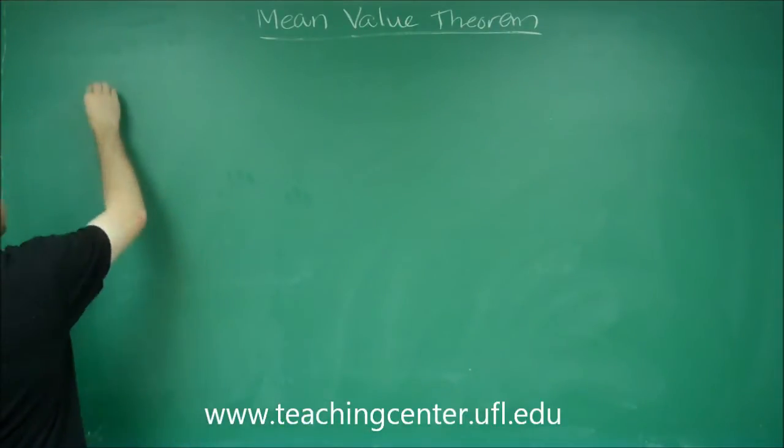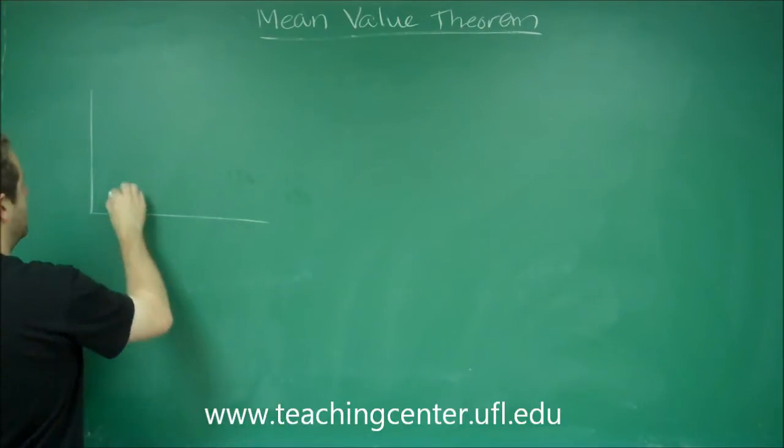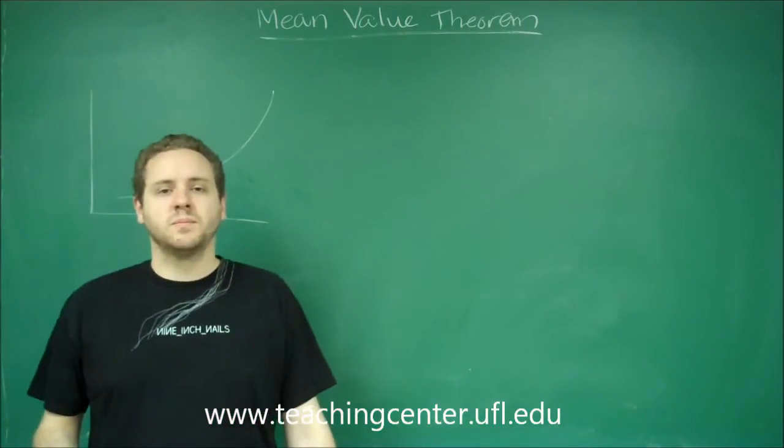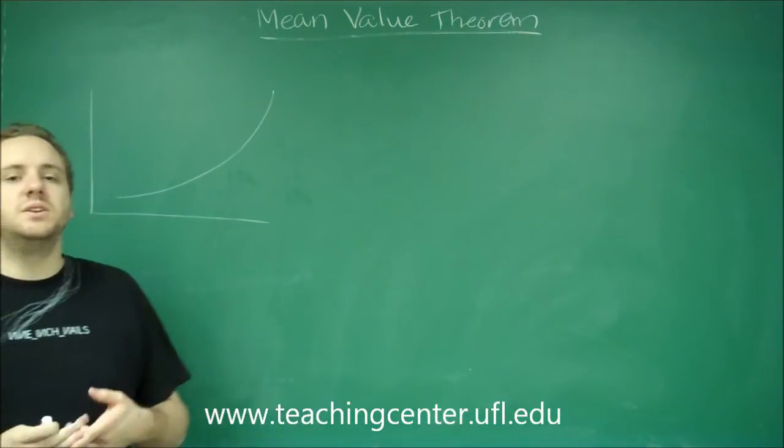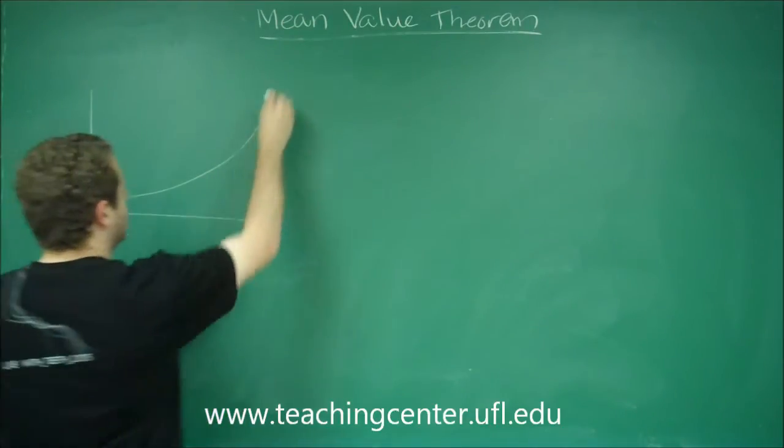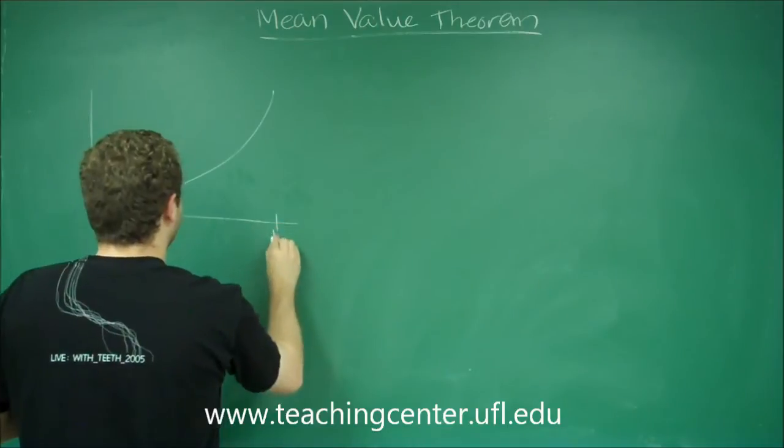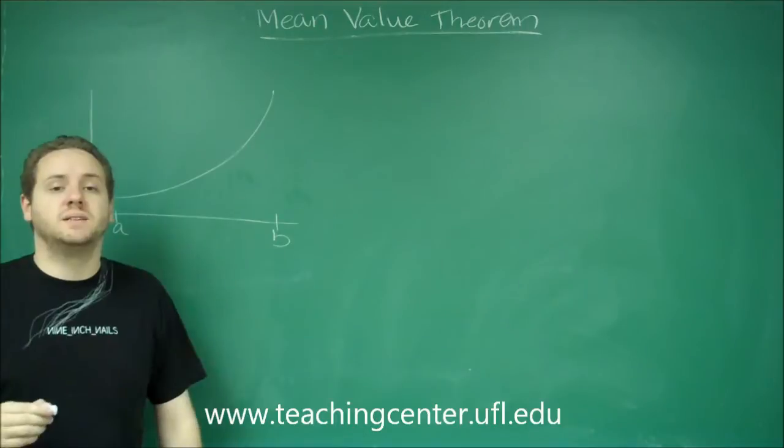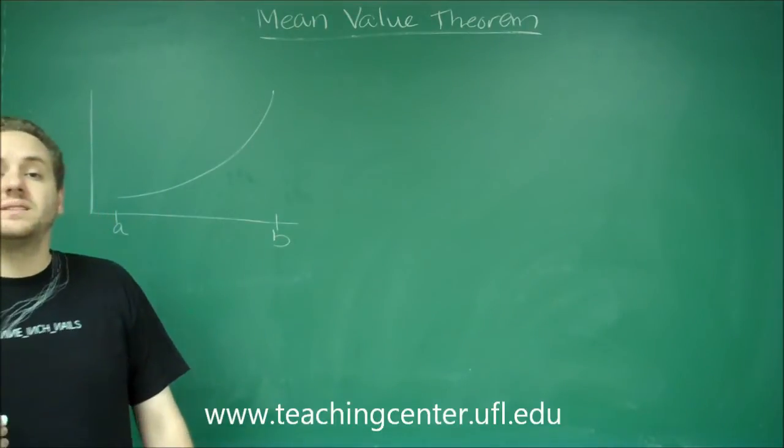So the Mean Value Theorem states that if you have some function, let's just say it looks like this curve, as long as the function is continuous and differentiable on the interval, so let's say our interval here is from a to b. Our function here is smooth, it's continuous and differentiable. If that's the case,